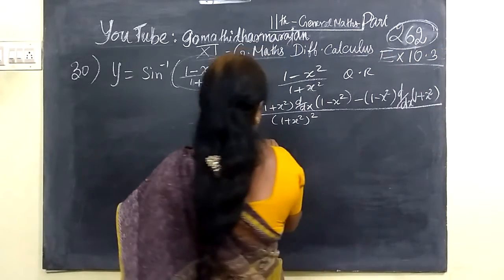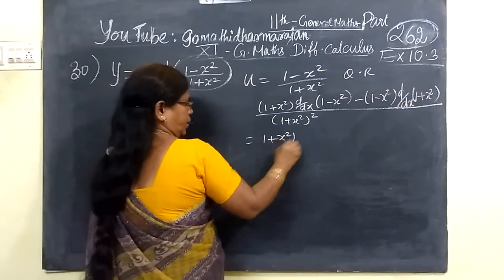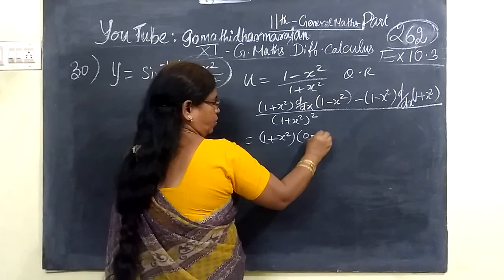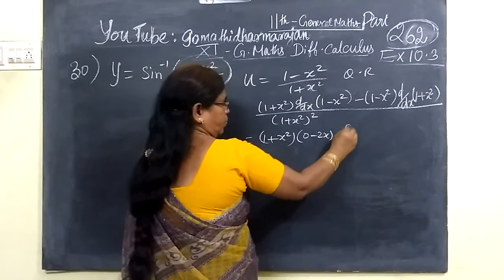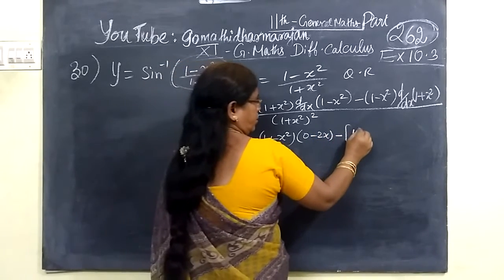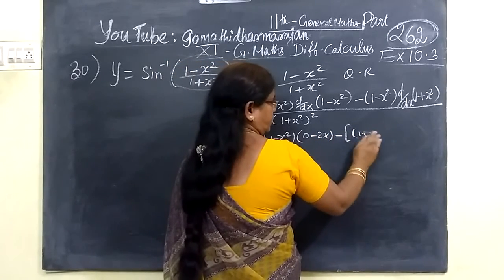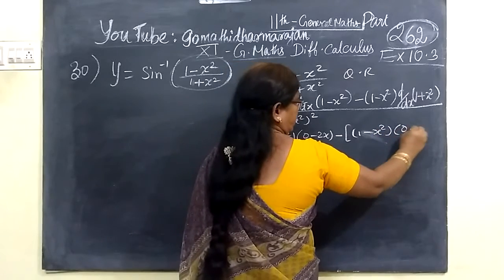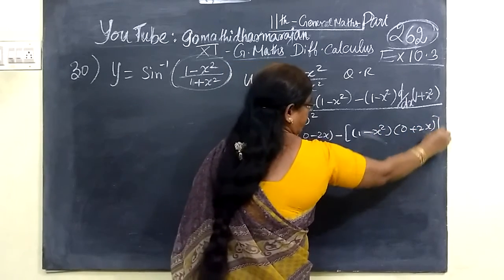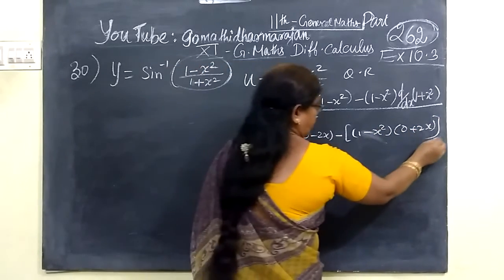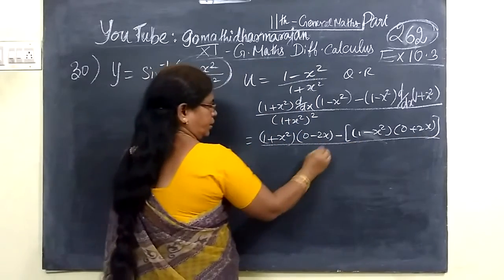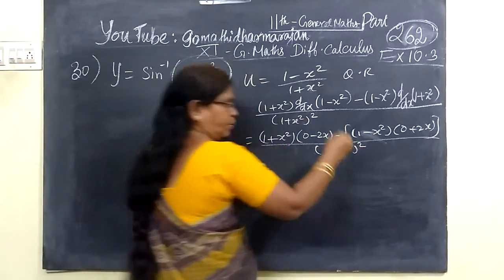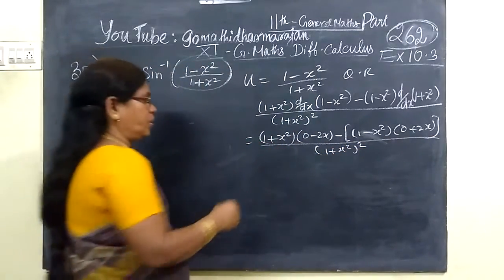So this is equal to: 1 plus x squared, differentiation gives 0 minus 2x, minus 1 minus x squared times 0 plus 2x.